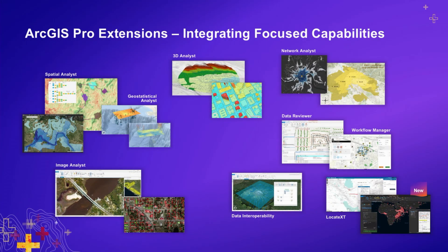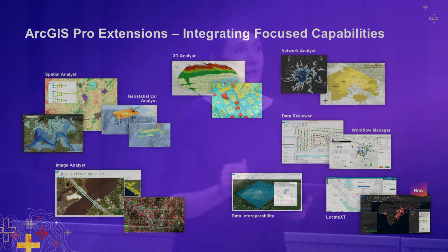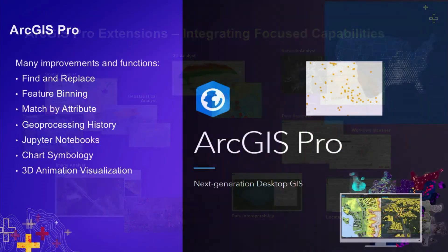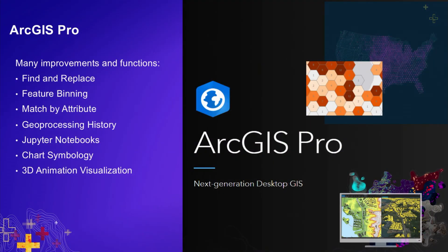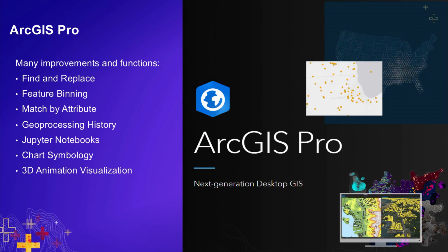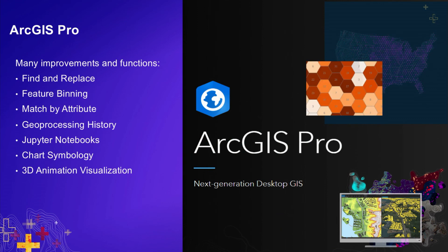In addition to the core capabilities of ArcGIS Pro, we're also making enhancements to extensions. Many common extensions like Spatial Analyst are still there, but I'm excited to highlight one transformational new extension called LocateXT. It focuses on utilizing technology to leverage unstructured text — imagine pulling out place names and geo-coordinates from unstructured text and applying them directly to a map. That's technology we haven't had before.